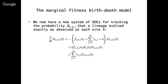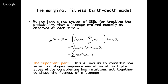Under the marginal fitness birth-death model, we write down a new system of ordinary differential equations for the probability density of a particular lineage evolving as observed in the phylogeny, conditional on that lineage being in a particular state i at each site k. The important point is that the birth rates of each lineage are scaled by the overall marginal fitness of the lineage, incorporating the fitness effects of multiple different mutations. This allows us to consider how selection shapes molecular evolution at many sites, while also considering how mutations act together to shape the overall fitness of a lineage.